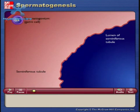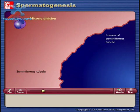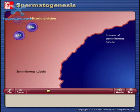Spermatogonia are the cells from which sperm cells arise. The spermatogonia divide by mitosis. One daughter cell remains a spermatogonium and the other becomes a primary spermatocyte.